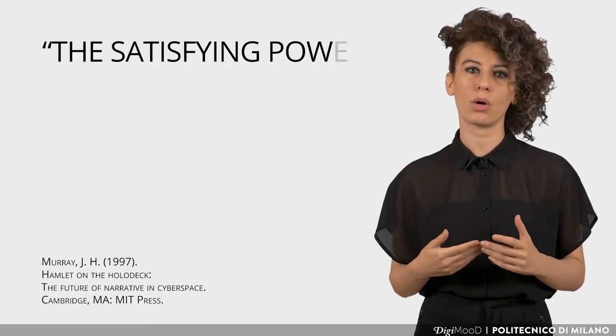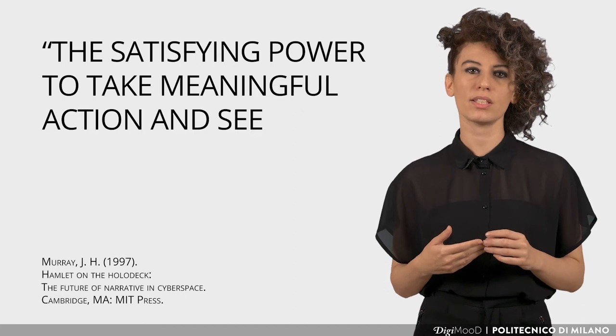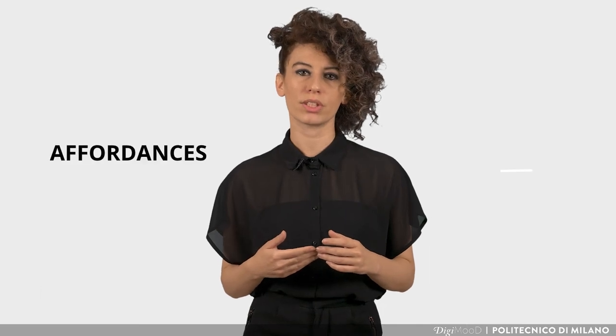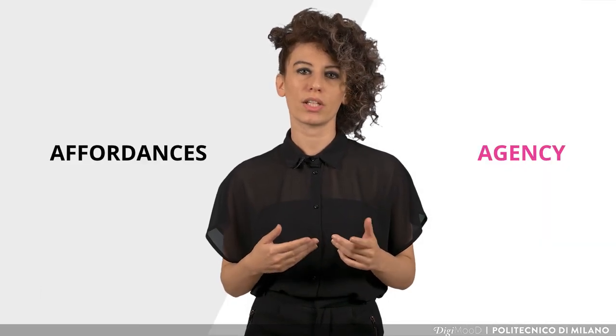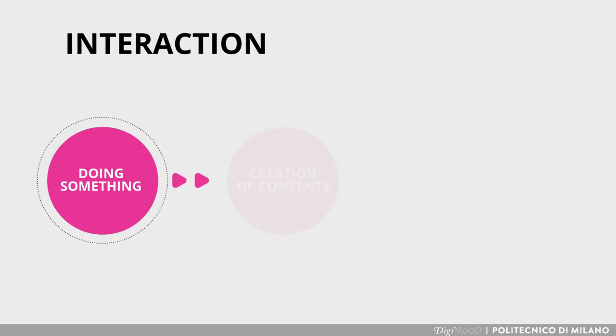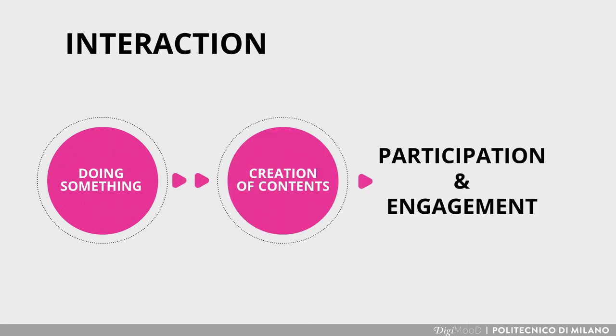Moving the reasoning forward, agency also plays a key role in designing interaction in narratives. The term agency has been described by Moray as the satisfying power to take meaningful action and see the results of our decisions and choices. The difference between affordances and agency is that the first implies a design perspective, the second the user's. According to that, as designers we can define the degree of interaction on a scale that goes from doing something to the creation of content, leading to participation and engagement.